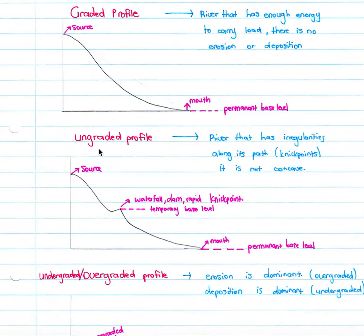When we look at an ungraded profile, we can clearly see that there is a point where the concavity of the river profile is disrupted. From source to mouth, there is no concave shape as we have over here. We have a point over here that disrupts that, and this could be a waterfall, a dam, a rapid. These are known as neck points. A neck point is a temporary base level. Your sea level is your permanent base level. An ungraded profile simply indicates that your river has irregularities along its path in the form of neck points and it is not concave.